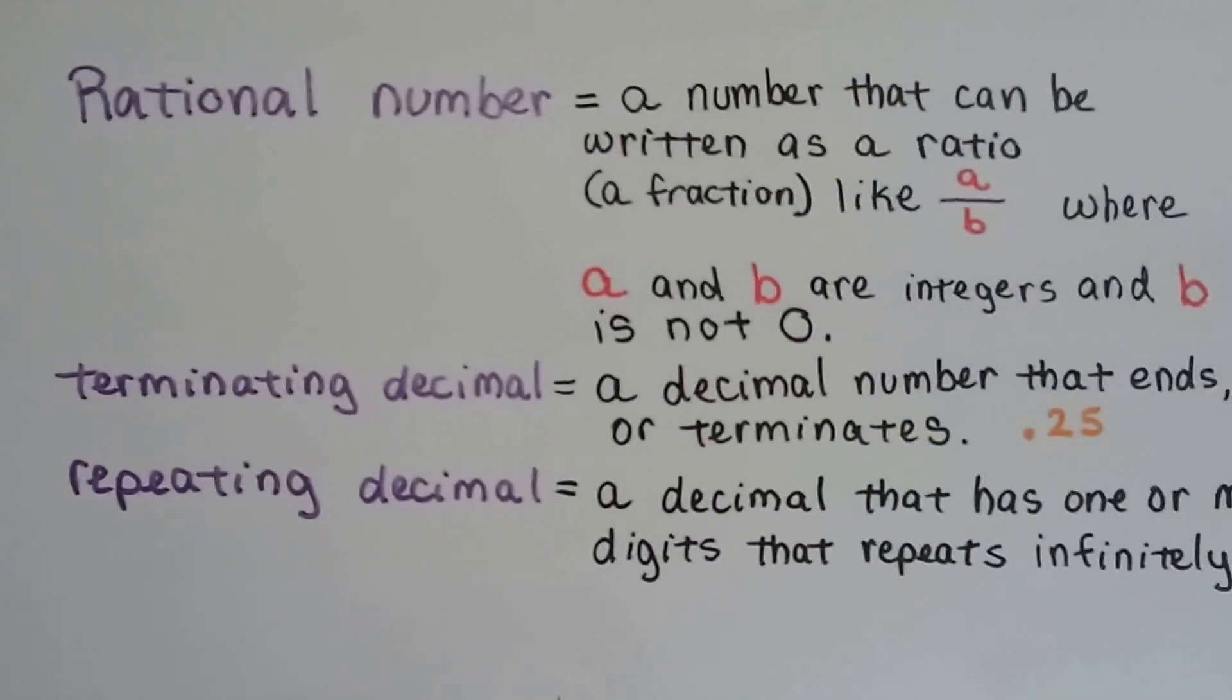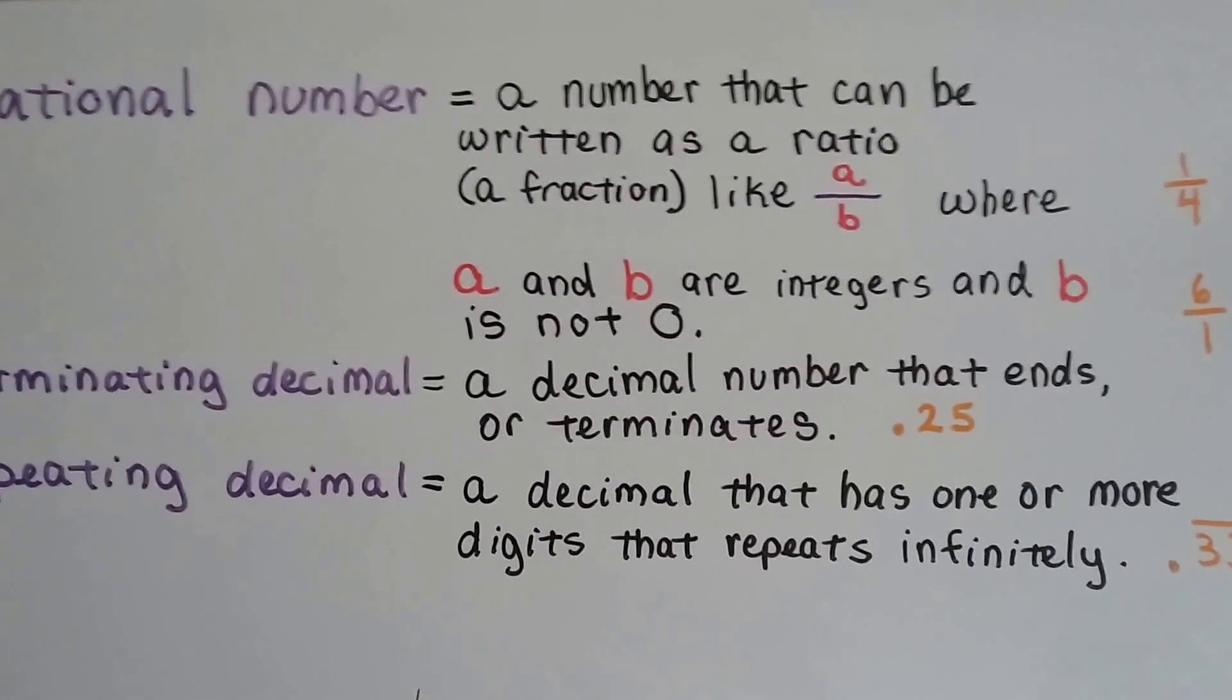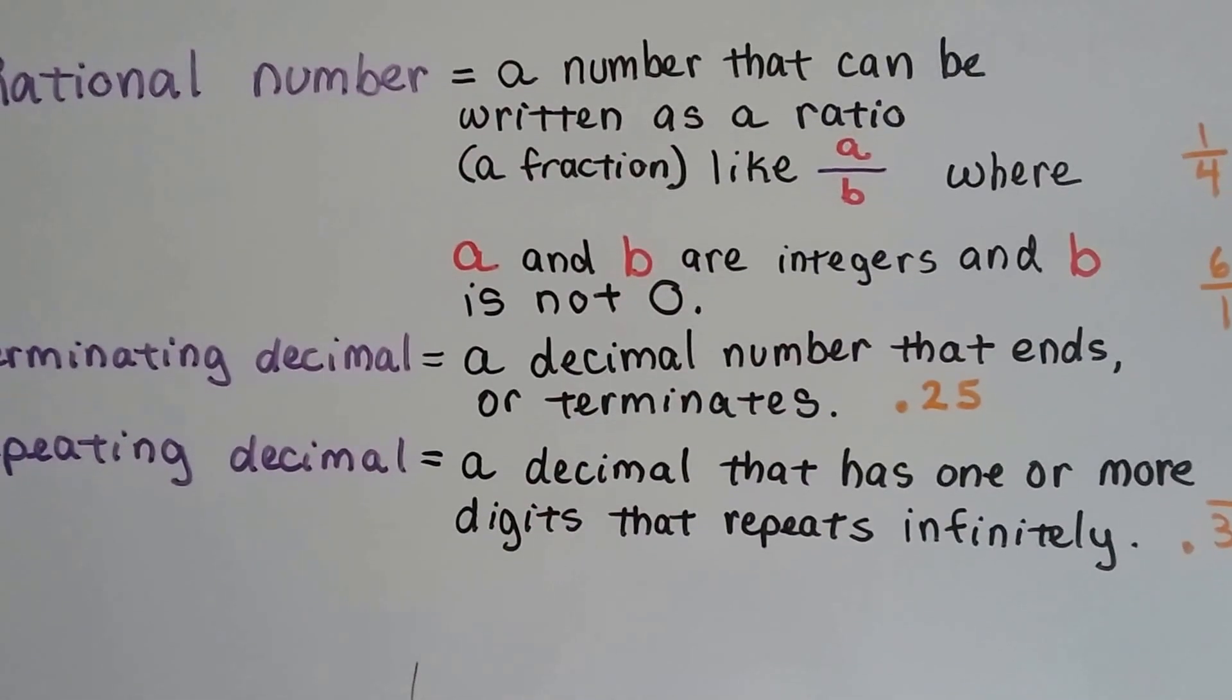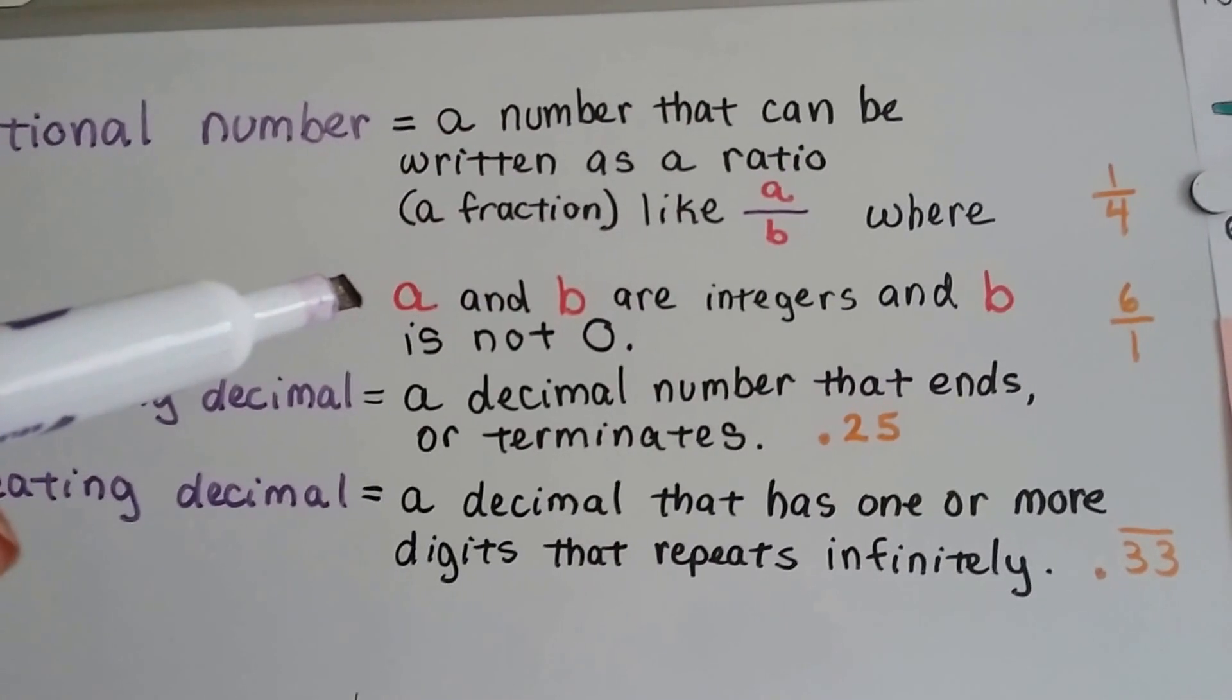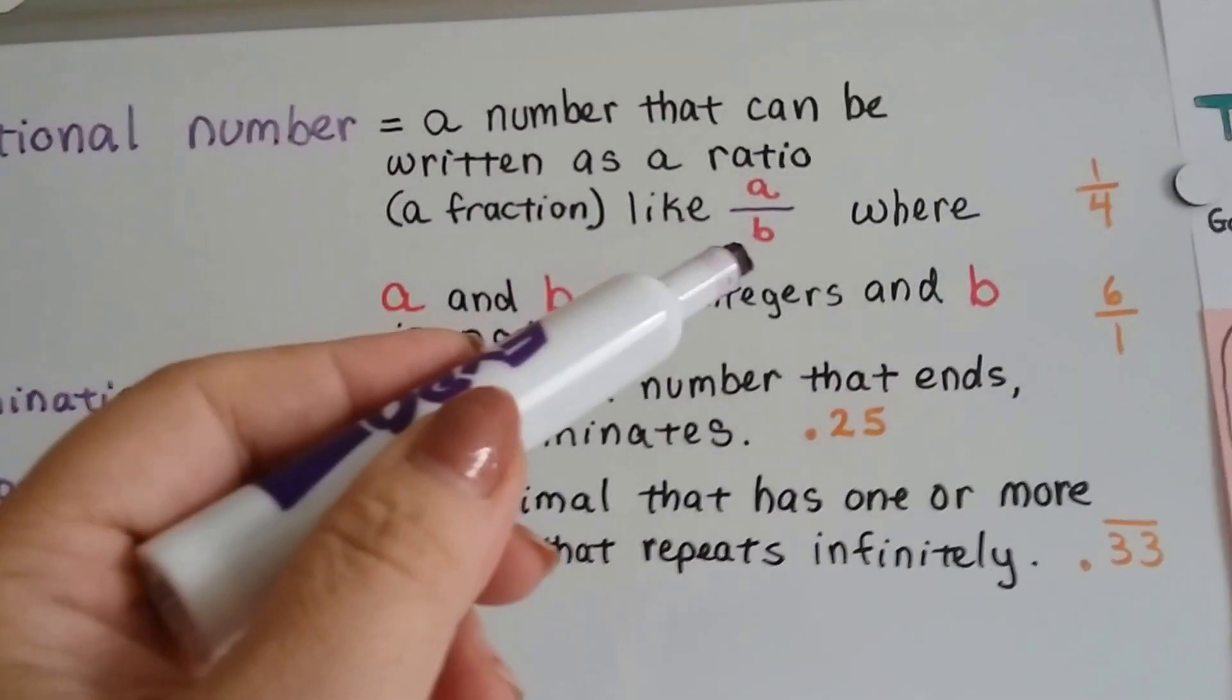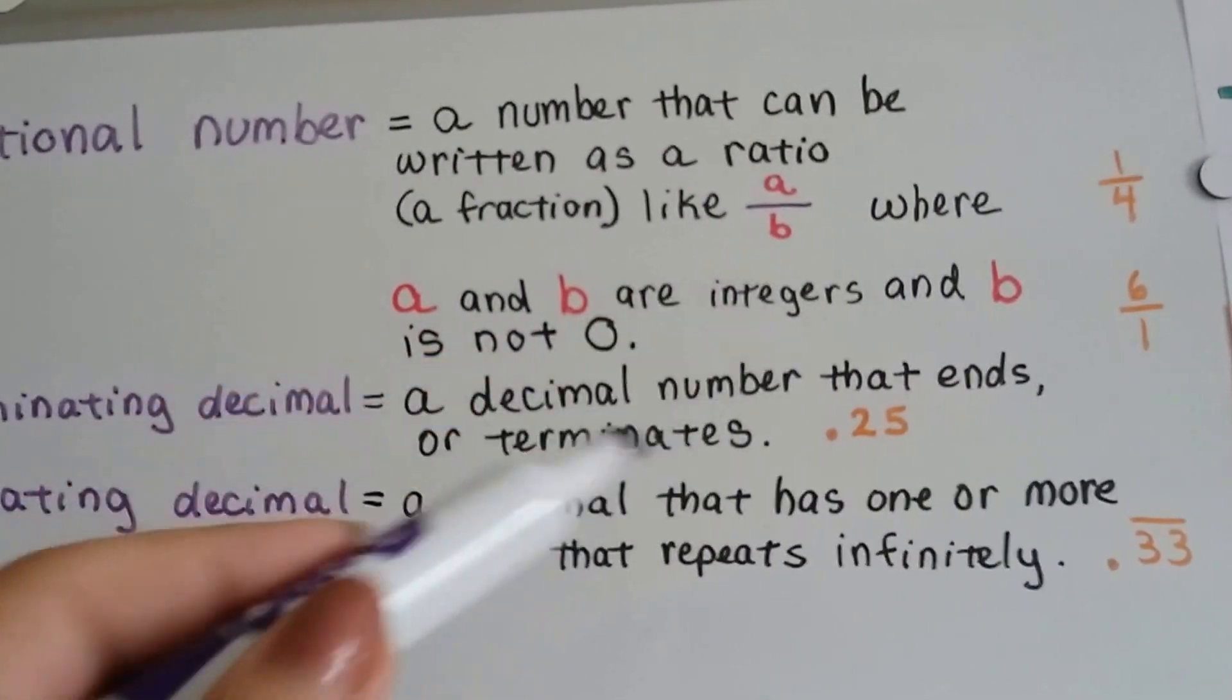A rational number is a number that can be written as a ratio. It can be written as a fraction, like a over b, where a and b are integers and b is not zero. The denominator is not zero.